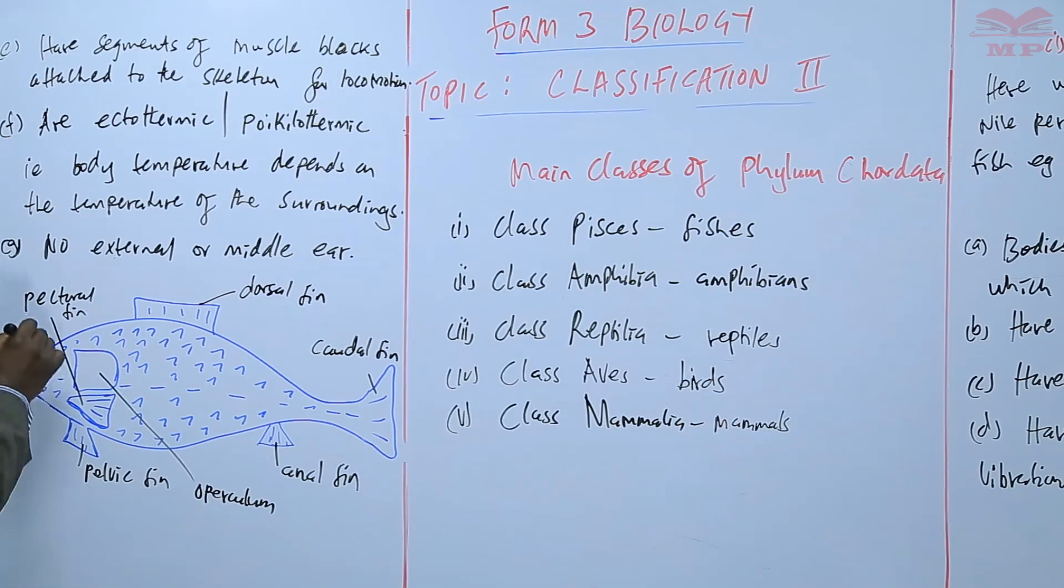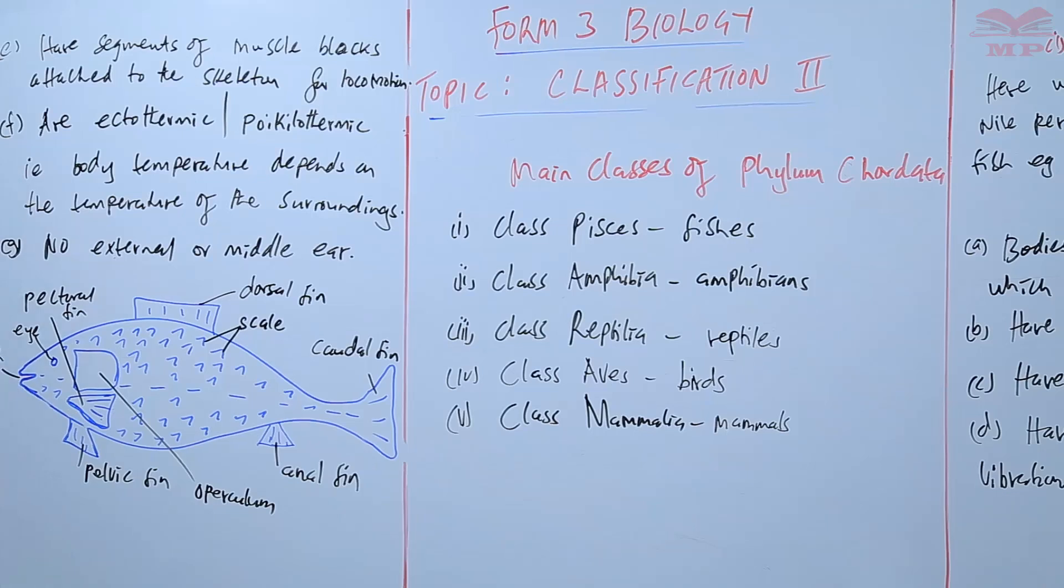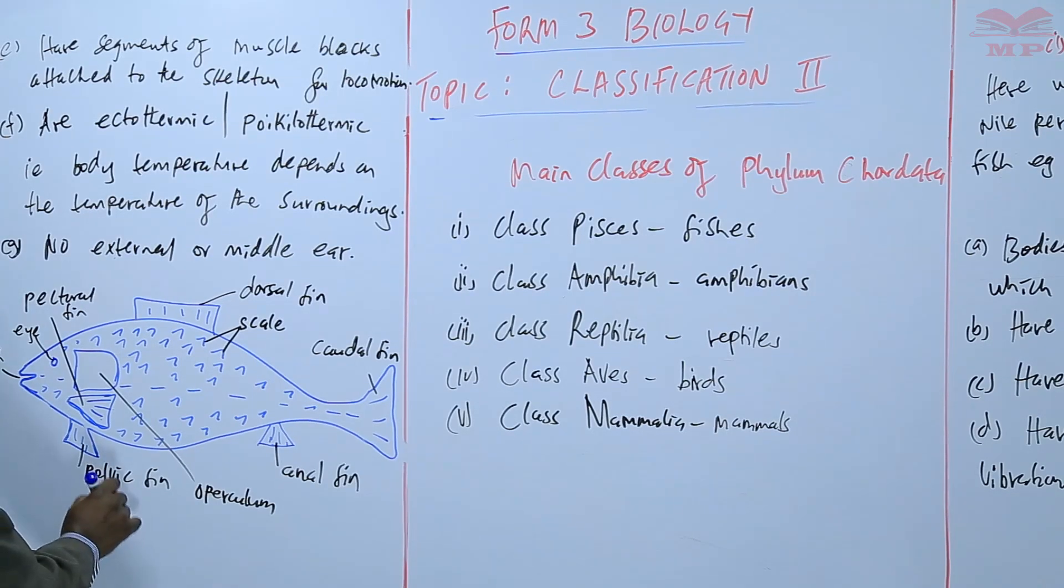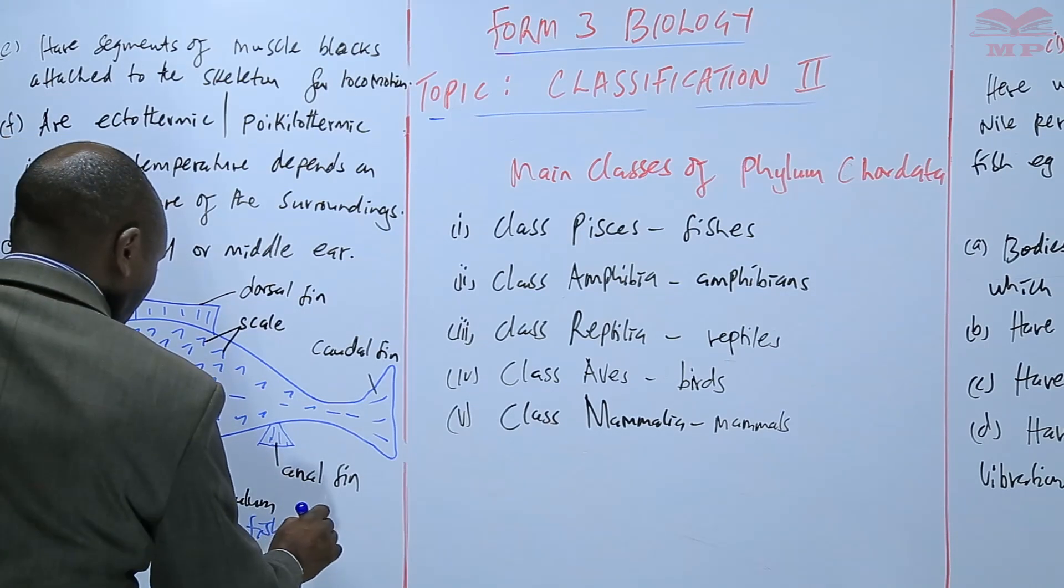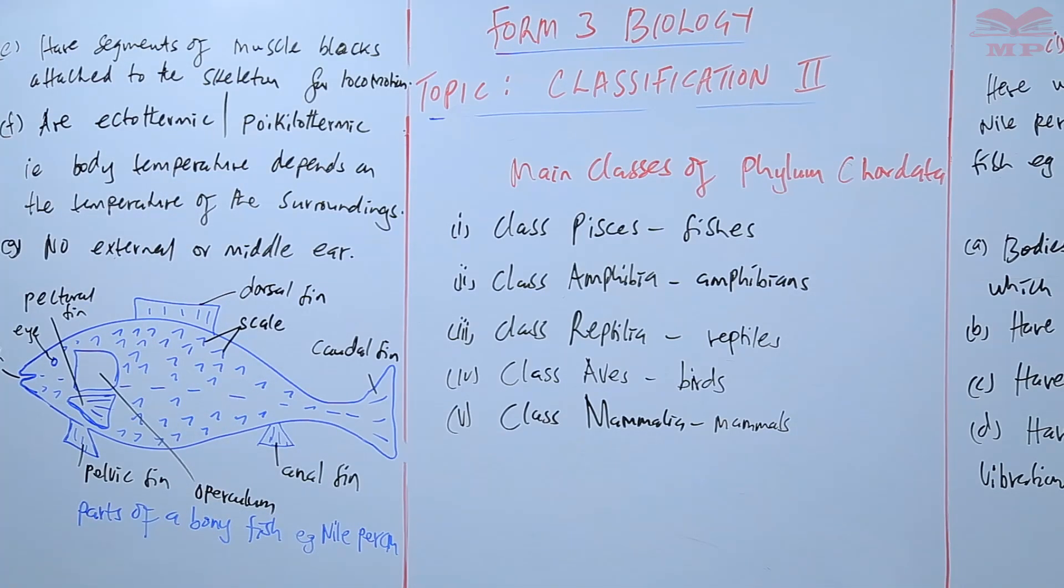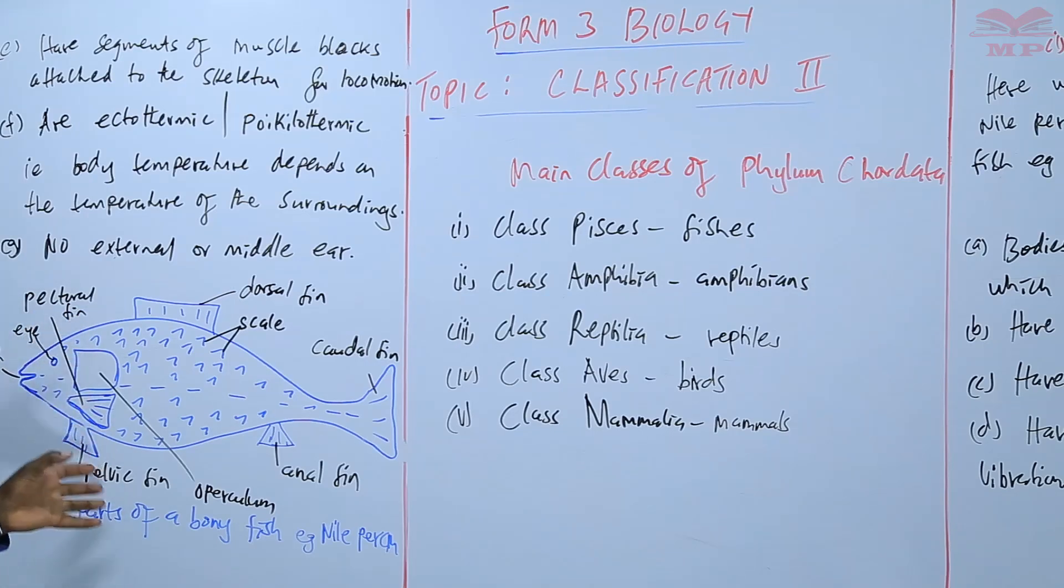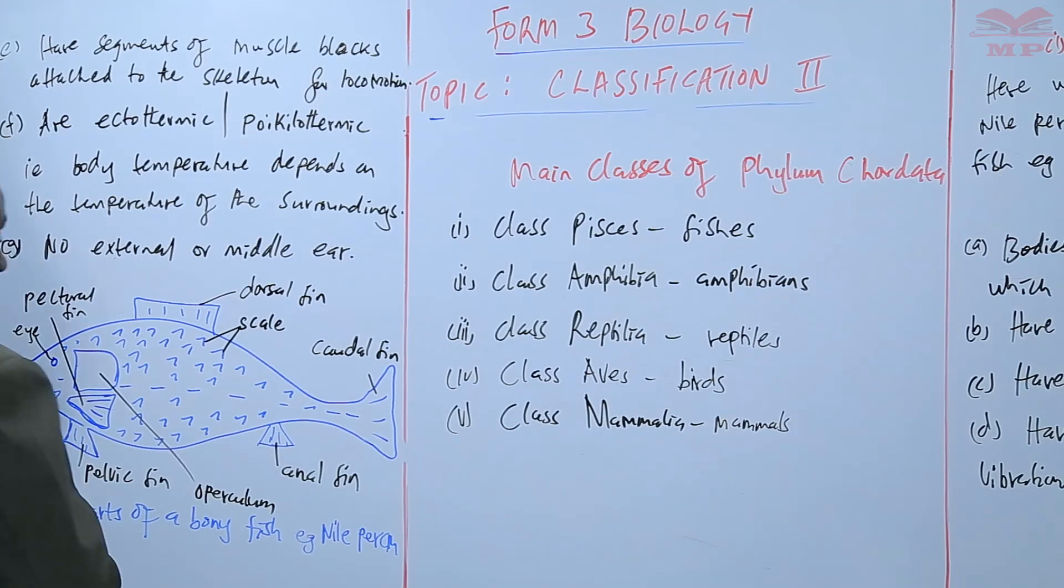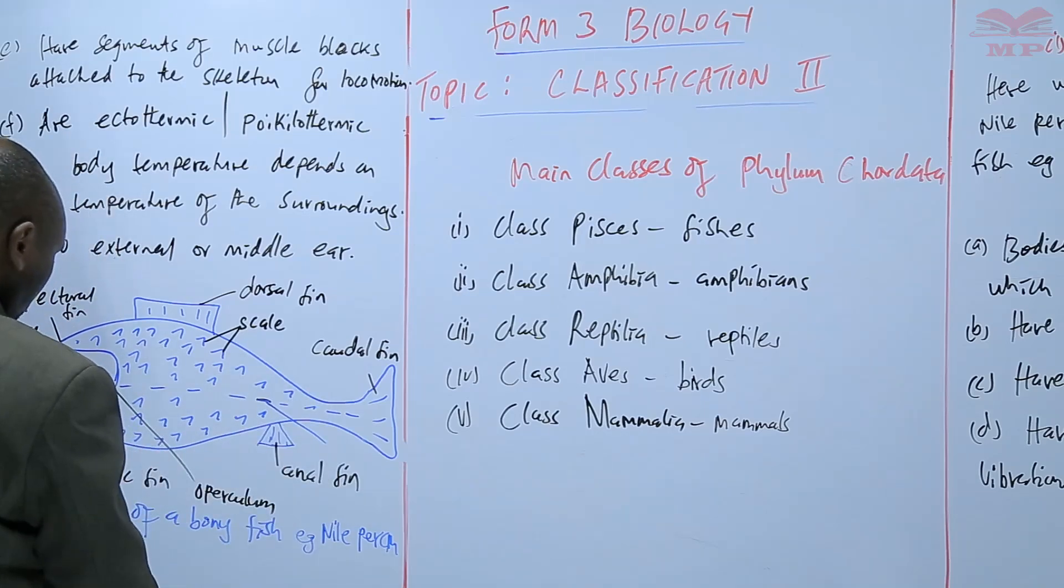We have the eye. Basically we have the scales as well, and generally these are the parts of a fish, a bony fish, e.g. the Nile perch. All those structures that we have mentioned in our description, the scales overlapping backwards to ease the movement in water, the various types of fins for the various kinds of locomotion, we have the lateral line.